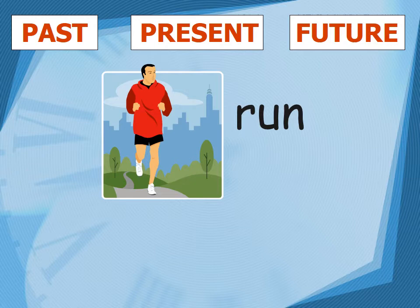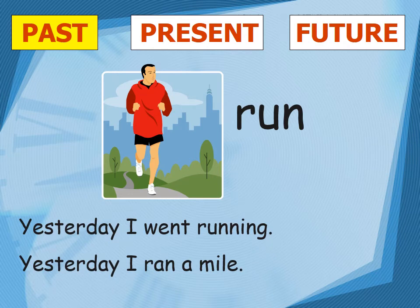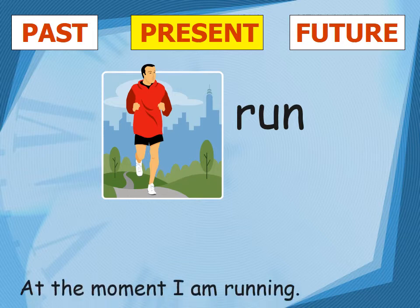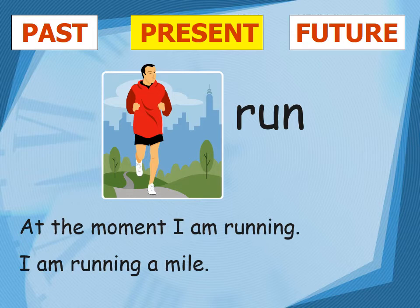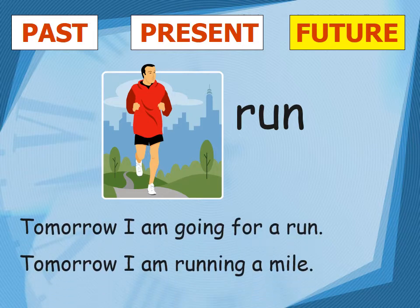Let's see the verb form 'run.' Run is a very common verb. How do you use it for past, present, and future expressions? In past tense: 'Yesterday I ran a mile.' In present tense: 'At the moment I am running a mile.' For future: 'Tomorrow I am going to run' or 'Tomorrow I will run a marathon.'